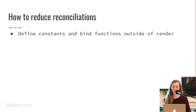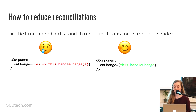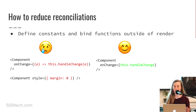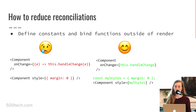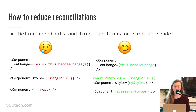To reduce reconciliations, define constants and bind functions outside of render. Instead of writing a change handler inline, create that function somewhere and bind it in your constructor — every time you reference it, it'll be the same bound function with the same reference. For object literals like styles, you can use a CSS class or define the constant at the top of your file outside your component and just reference it — it'll be the same object every time. And simply only send the props that a component actually needs.